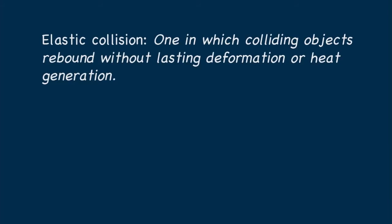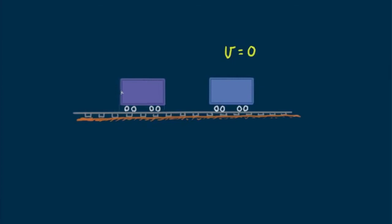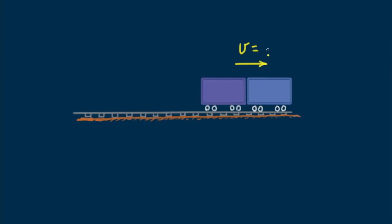The cue and eight ball illustrate an elastic collision — one in which colliding objects rebound without lasting deformation or heat generation. Then there are inelastic collisions, where colliding objects become distorted, generate heat, and possibly stick together. Momentum is conserved in all collisions, whether elastic or inelastic, so long as no external forces act during the brief period of collision. Suppose a freight train car rolls at 10 meters per second and collides with an identical car at rest — they couple together. How fast do the coupled cars move? Until next time, good energy!